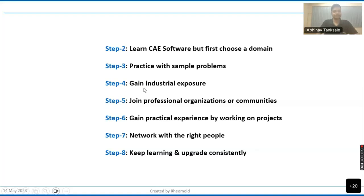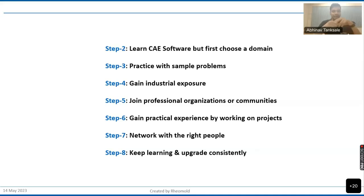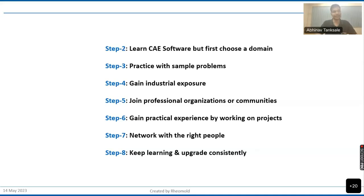Step four is gaining industrial exposure. When we learn what we can do with a software, we start enjoying the learning process and may work on projects not actually required by industry. It is important to know what's happening in the real world. You can do this by attending seminars, workshops, webinars, and conferences led by industry professionals. There are conferences like the Altair conference or the DIANA conference, which occur multiple times a year. Attend these events, take notes from industry professionals, meet them, and understand the latest developments and what has become outdated.